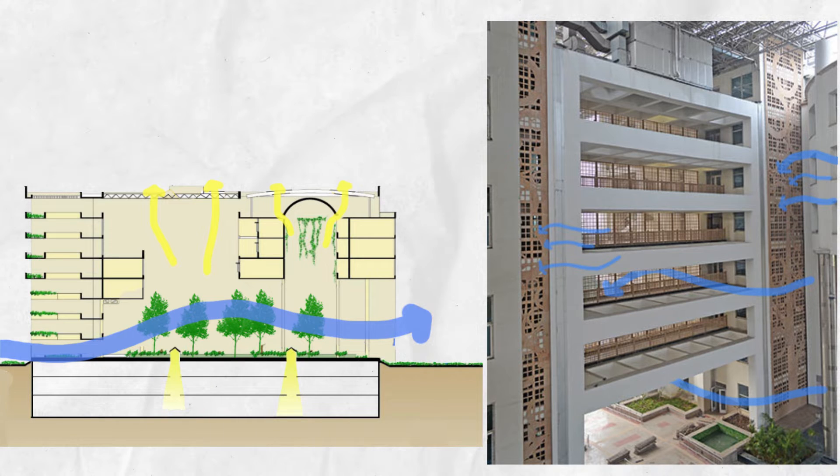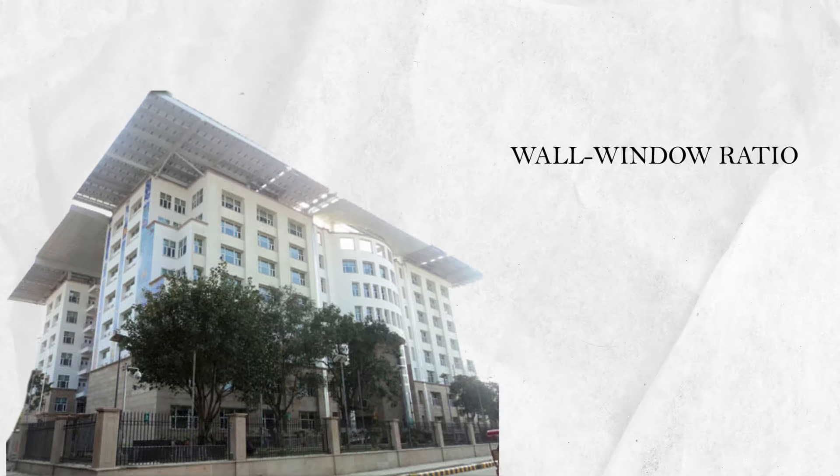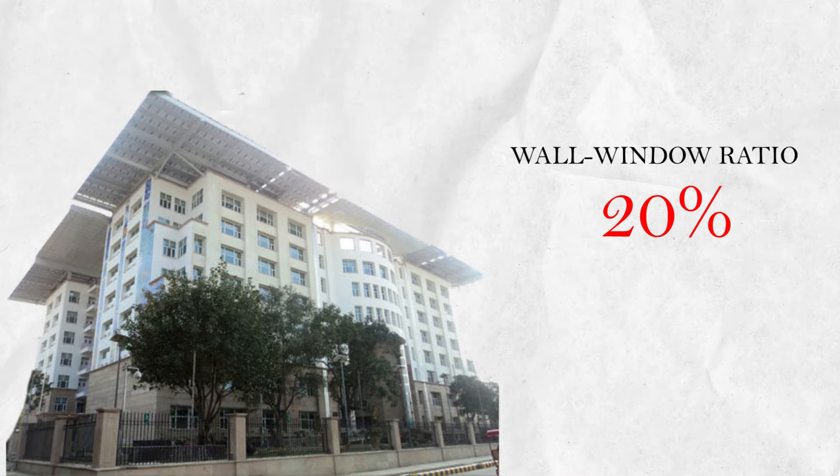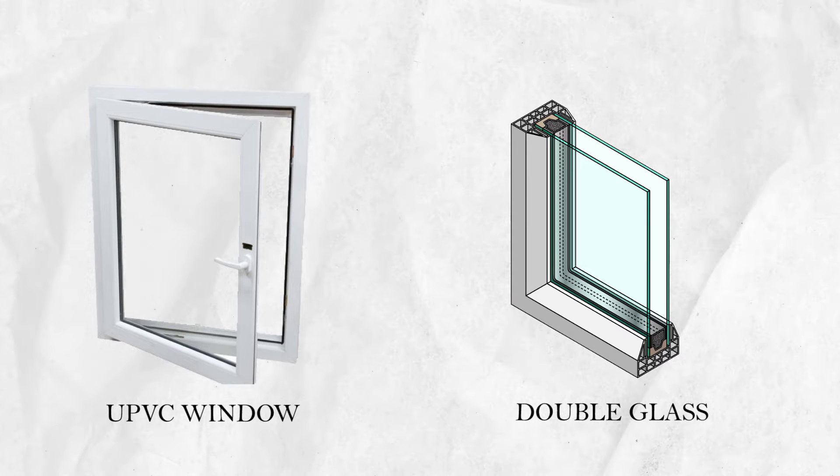Facade: The external wall and window ratio is only 20%, which helps to reduce heat gain. Windows are made of UPVC with double glazing, making for highly energy-efficient windows.